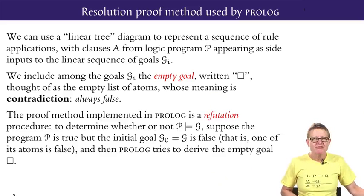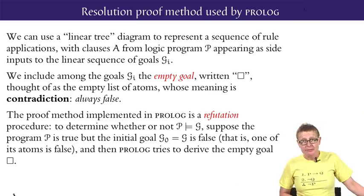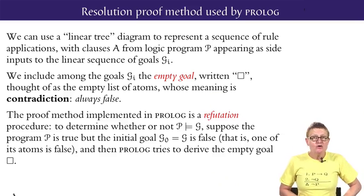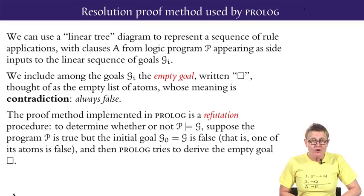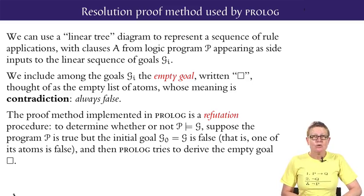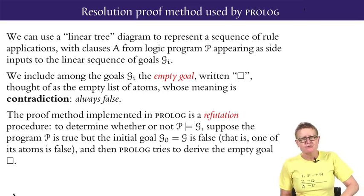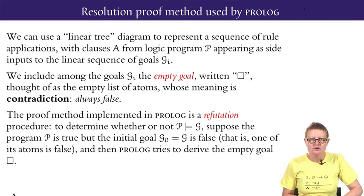Prolog implements a refutation procedure like proof trees. Suppose all clauses in the program P are true but the initial goal G has at least one atom false. Then Prolog starts from G and tries to derive the empty goal square.